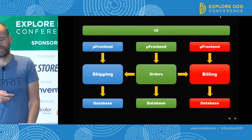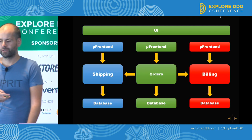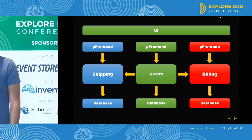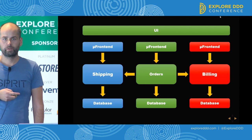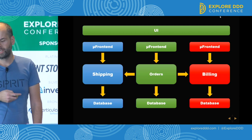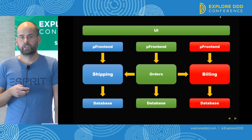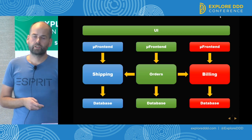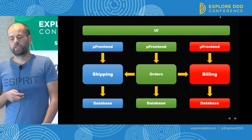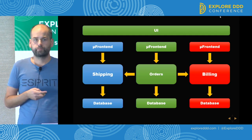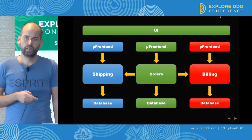We have three microservices — or macroservices — shipping, orders, and billing, each with its own user interface, a microfrontend. For the purpose of this presentation, we'll assume the green part is done already, and we just need to build the blue part — the shipping part — and the billing part.